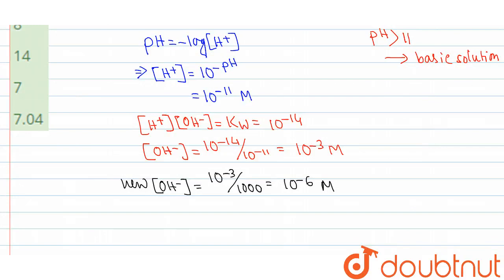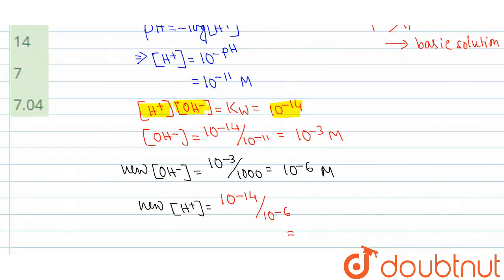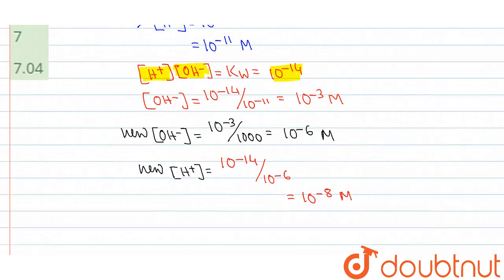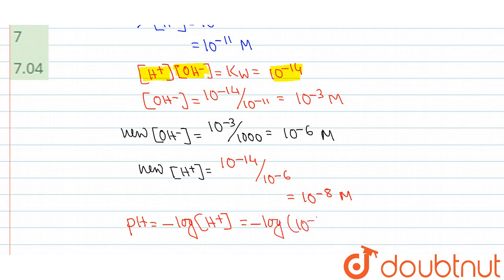Now the new concentration of H+ — how much will it be? We will simply use the formula: concentration of H+ into concentration of OH- equals 10 to the power minus 14. So, 10 to the power minus 14 divided by 10 to the power minus 6 gives 10 to the power minus 8 molar. So the new pH will be minus logarithm of concentration of H+, that is minus logarithm of 10 to the power minus 8, which is 8.